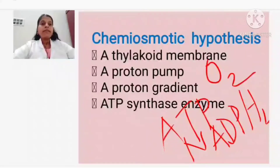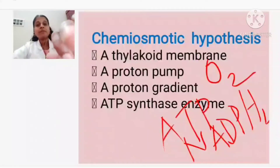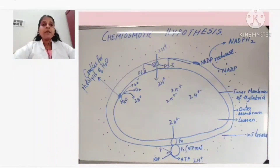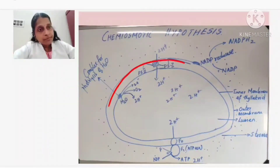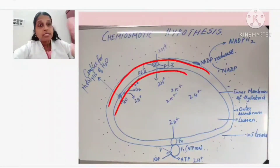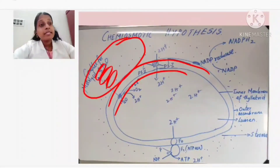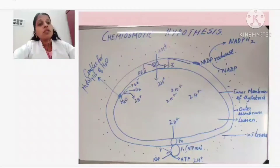Now we are going to see where and how the light reaction of chemiosmotic hypothesis takes place, which can be represented in a diagram. Looking at the diagram, you can find this membrane - this is the outer membrane, and this is one single thylakoid. In a chloroplast there are many thylakoids present, and all the thylakoids together we call grana. This is one single thylakoid that I have drawn here.